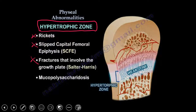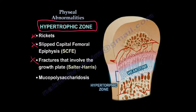Now we go to the third zone: the hypertrophic zone. Most of the problems happen in the hypertrophic zone — rickets, slipped epiphysis, and Salter-Harris fractures all happen in the hypertrophic zone. It is the weakest zone, so a lot of problems happen there.